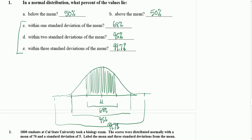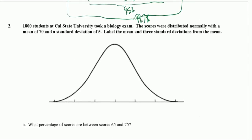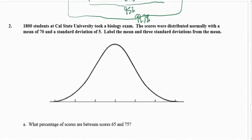C through E is what the empirical rule tells us. Now we're going to apply this. We have 1800 students at Cal State University who took a biology exam. The scores were distributed normally with a mean of 70 and a standard deviation of 5. So here's the mean, 70. If I go one standard deviation to the right, I add 5, add 5 again, add 5 again, and then subtract 5.